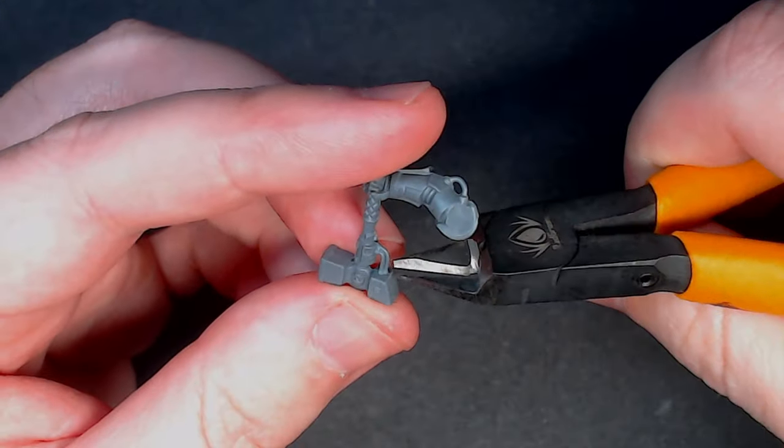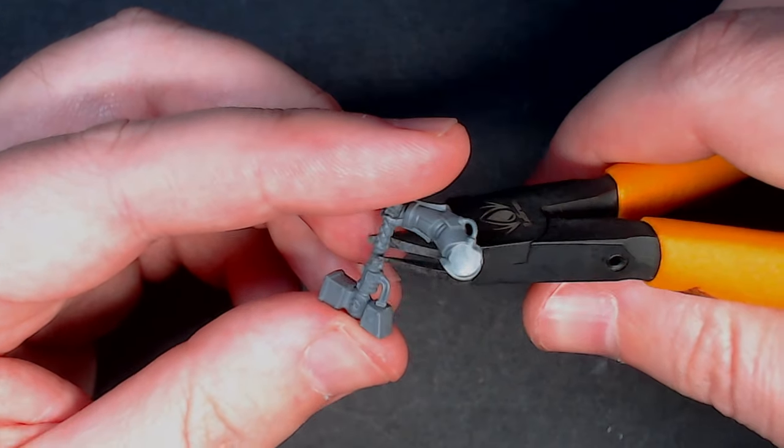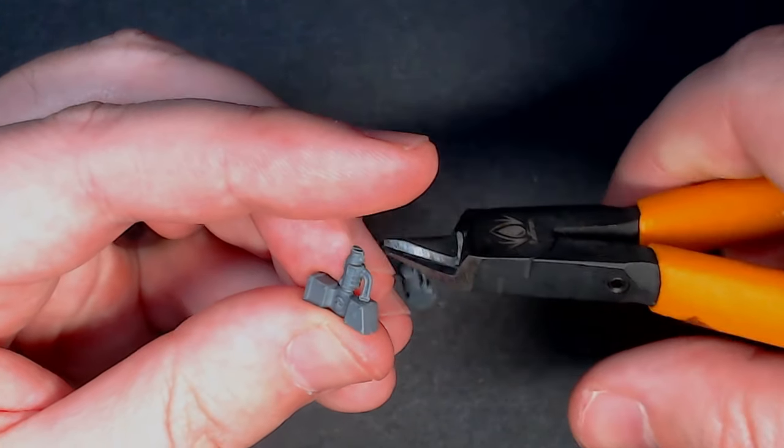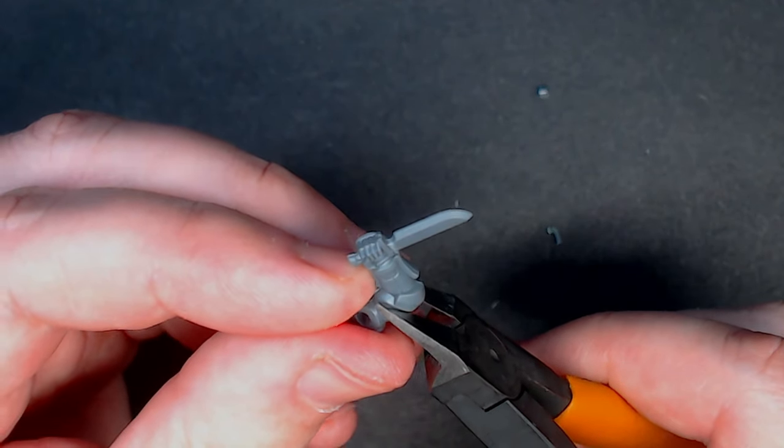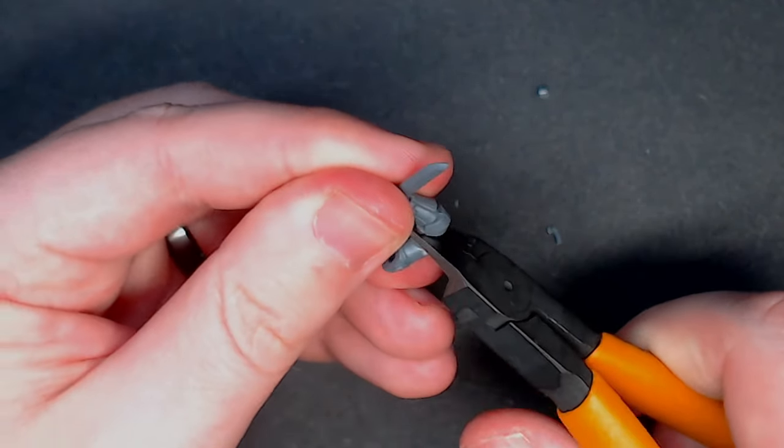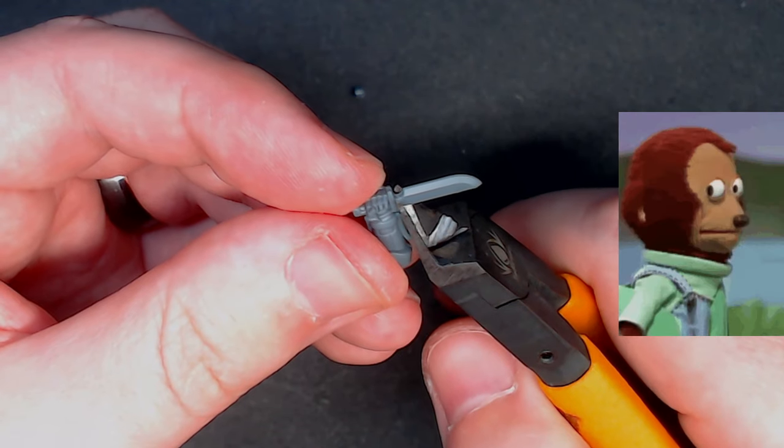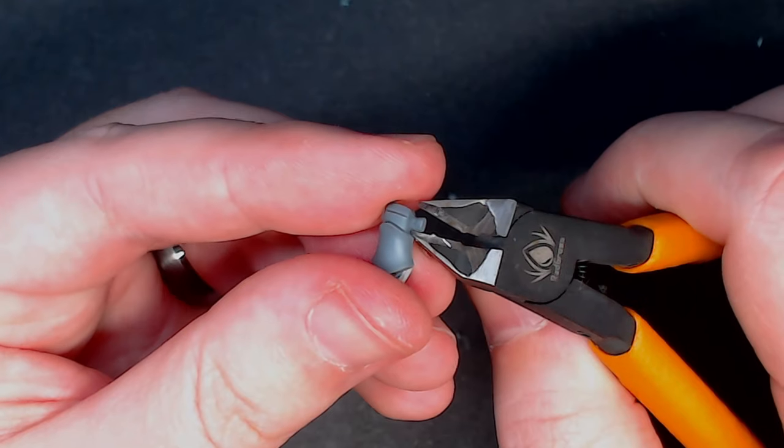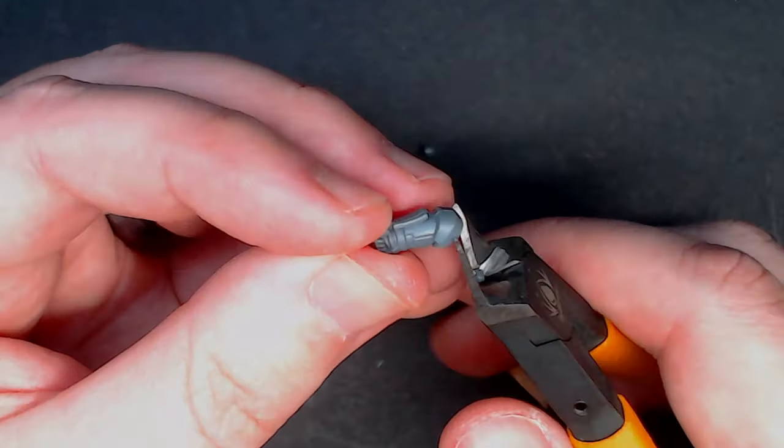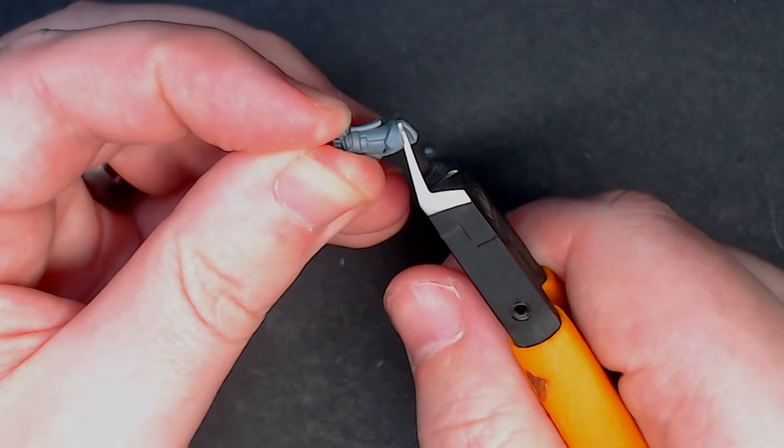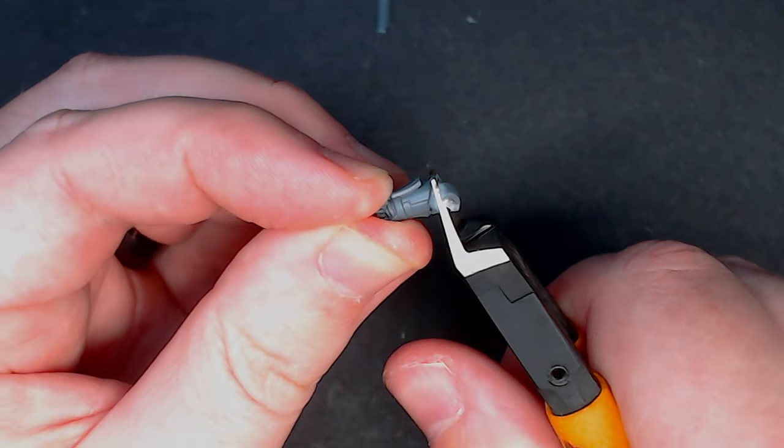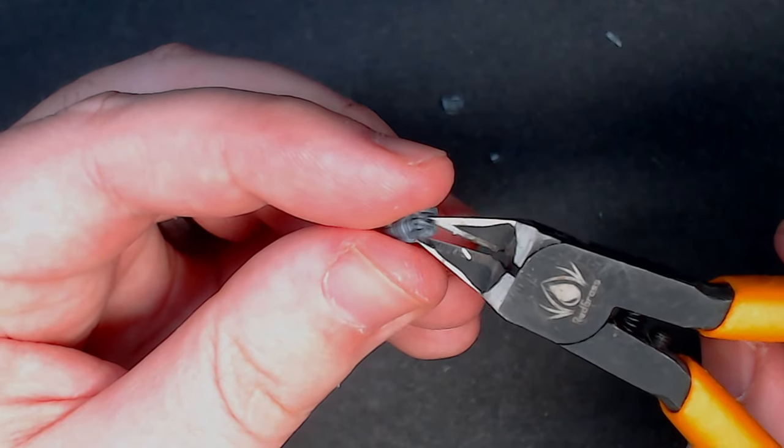Next up using that thunder hammer I mentioned from the Assault Intercessor kit I used my hobby clippers to remove the power source and the head of the hammer. For the fist that's in the middle of the Fist of Dawn, that's too many fists and that's poor phrasing, I again dipped into the Assault Intercessor kit using this arm holding a knife. The reason I wanted to use this arm is because I really liked the armour plating on the forearm.